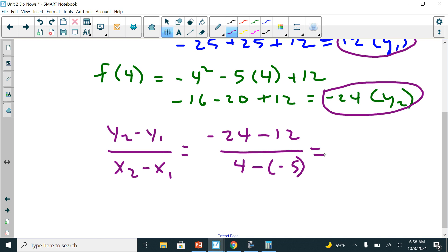So on the top I have negative 36. And on the bottom I have 4 plus 5, because negative negative is a positive, so that's positive 9. Negative 36 divided by 9 is negative 4. So my average rate of change final answer is negative 4.